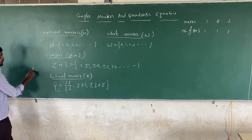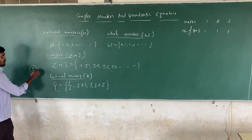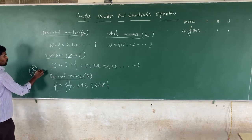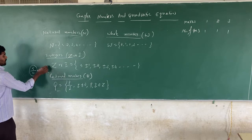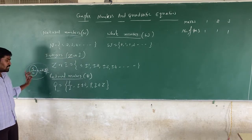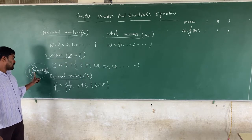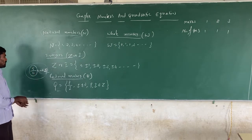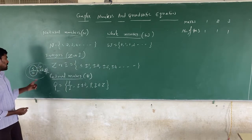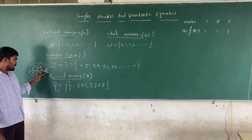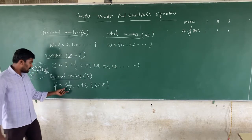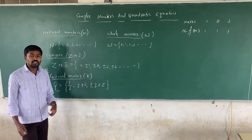For example, 5 divided by 0 is not defined. Still, no one has defined anything divided by 0. It is not defined.